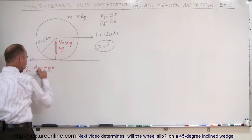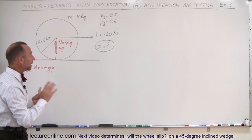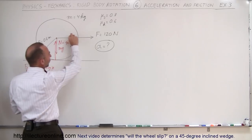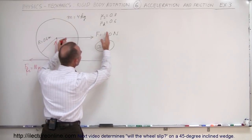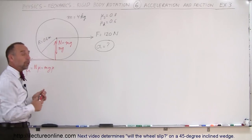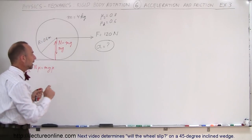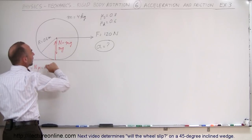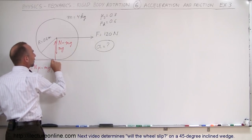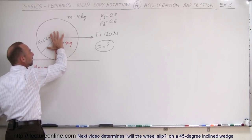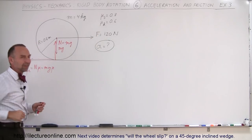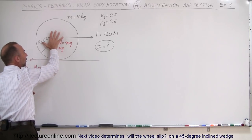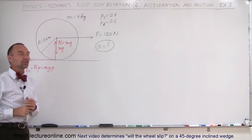Now why is the friction force directed to the left? If mu is zero so there's no friction between the wheel and the road, and you apply a force of 120 newtons, the wheel is simply going to slide across the road without rotating. If there is friction, the friction force will cause the wheel to rotate, and if the acceleration is not too large, there will be static friction because the wheel will be able to keep up with the acceleration and will not slip.